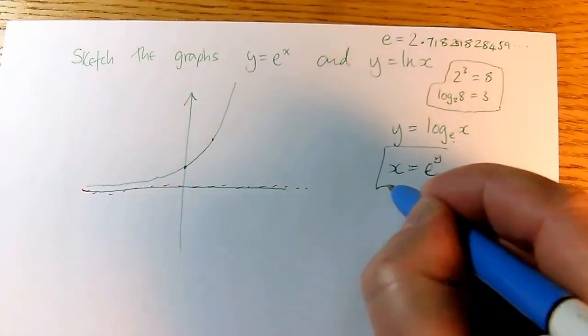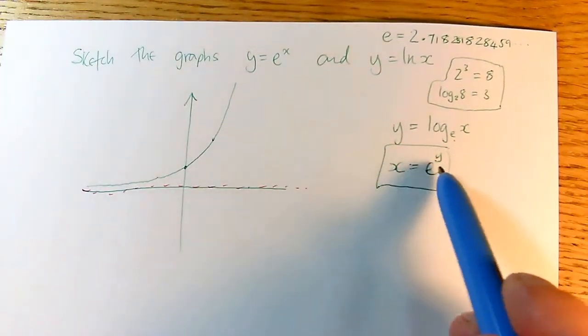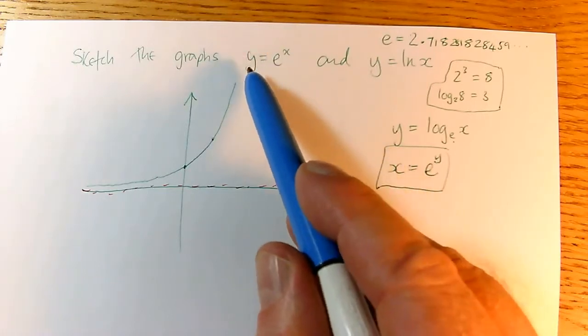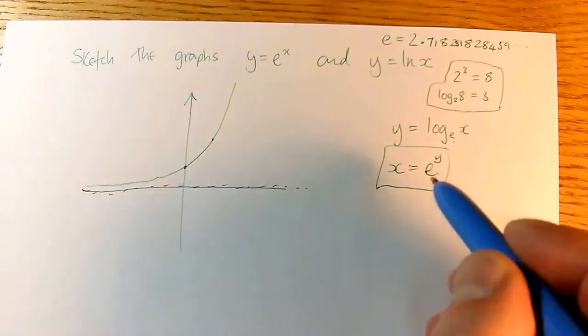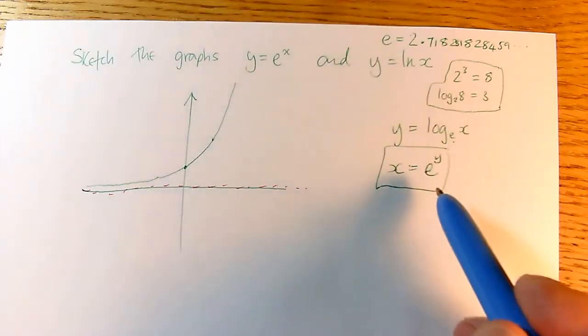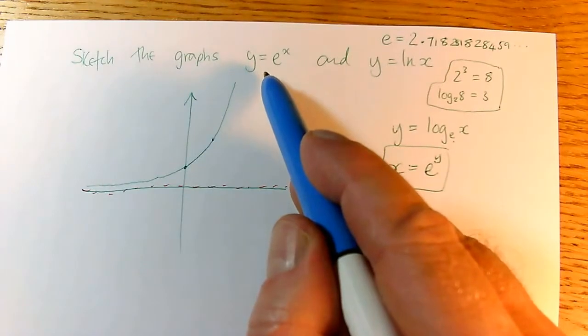So we can see that if y is log to the base e of x, then I've got x equals e to the power of y, which is the same as this, but with x and y swapped around. So if I want to know what the graph of y equals log to the base e of x looks like, that's equivalent to this graph, which is this graph with x and y swapped around.